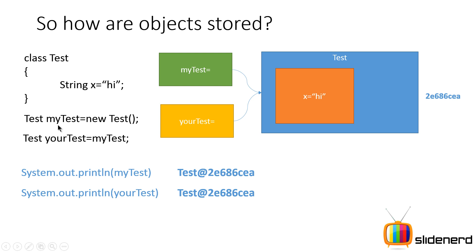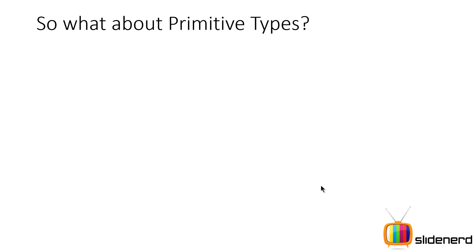At this point, if you print myTest and yourTest, both are going to show 2e686ce8. This is why when comparing two objects of the same type, you should avoid using == by saying myTest == yourTest, because that merely checks if both of them contain the same address — which may not always be the case. It is not going to compare the actual values. I've already discussed this in my Java Programs for Beginners playlist when talking about string comparisons.